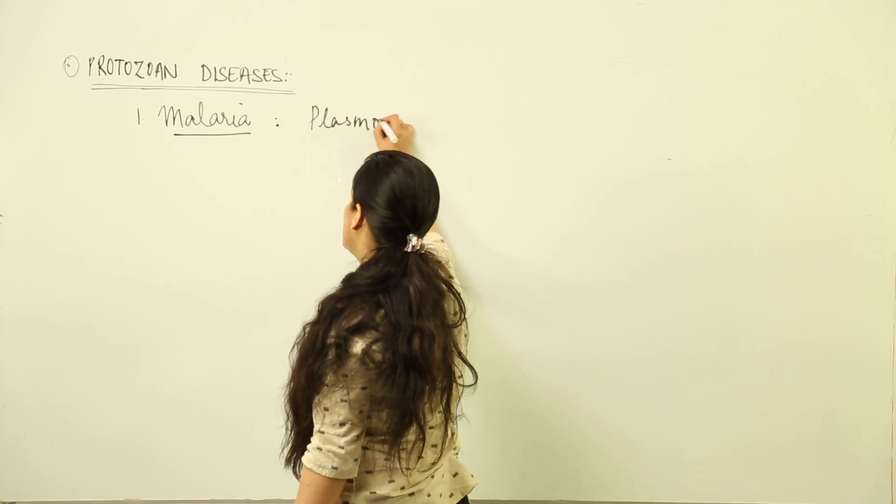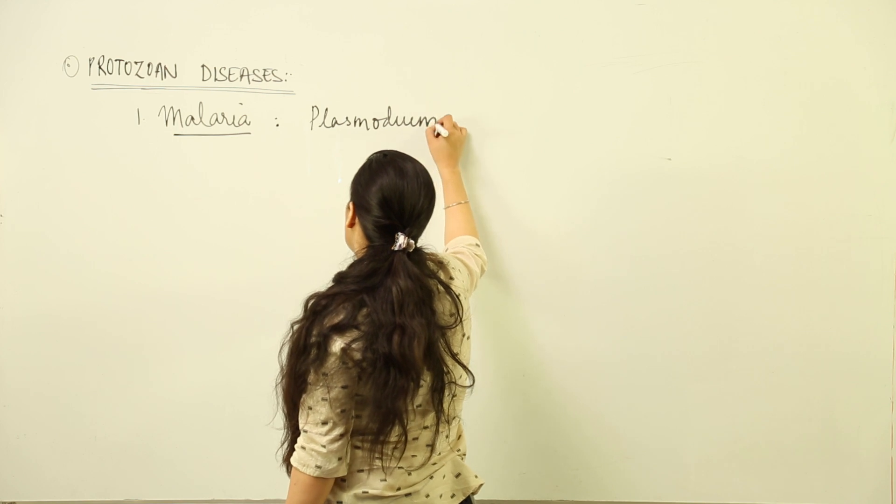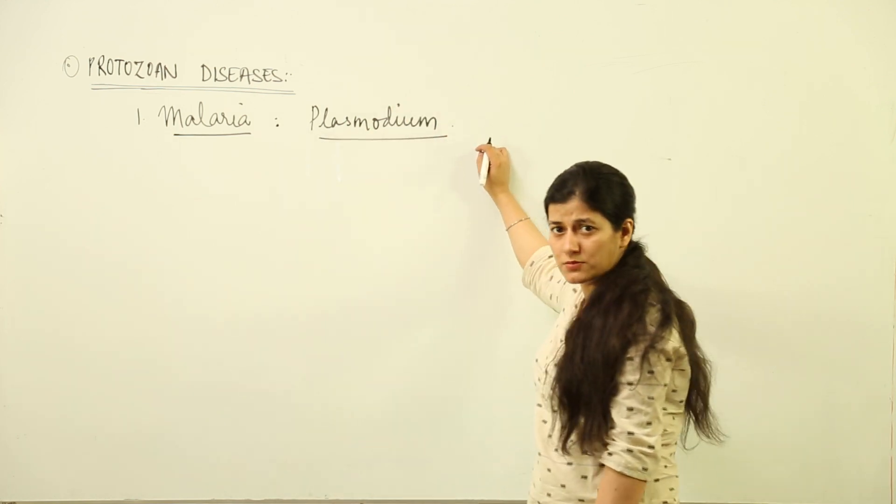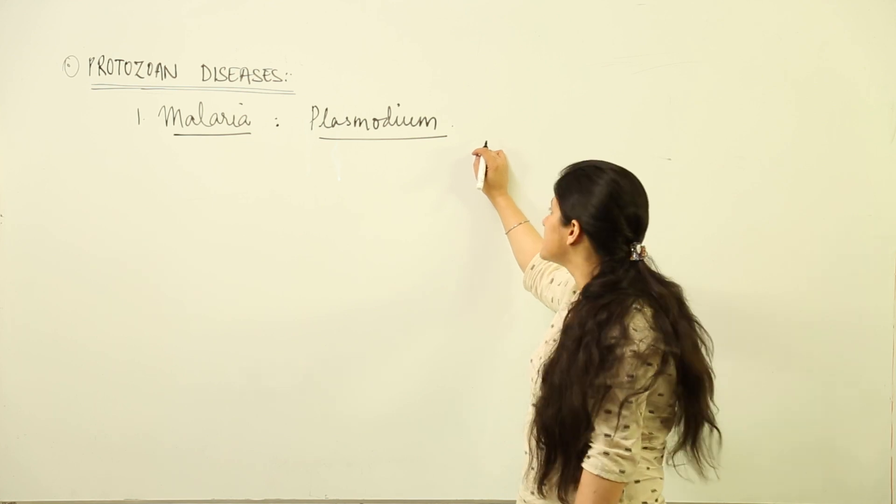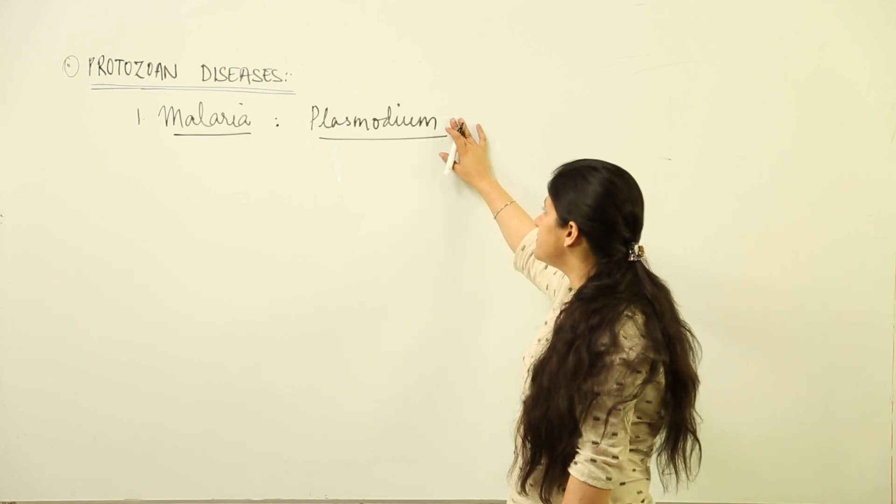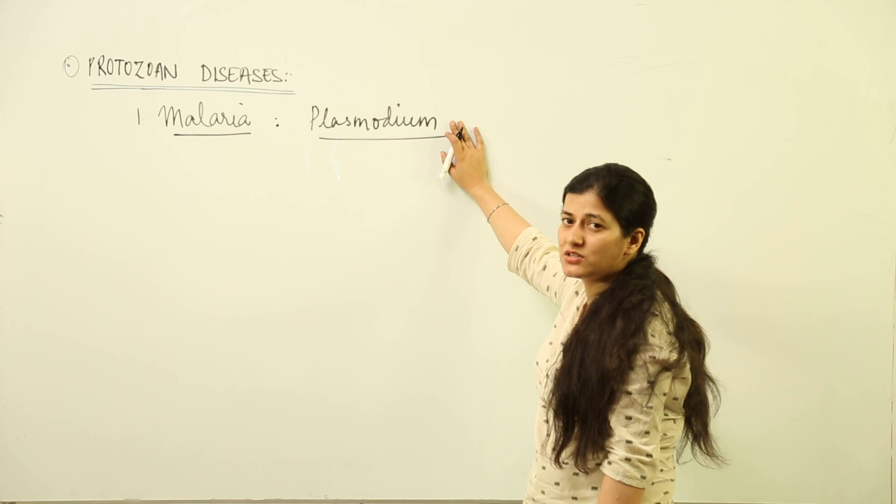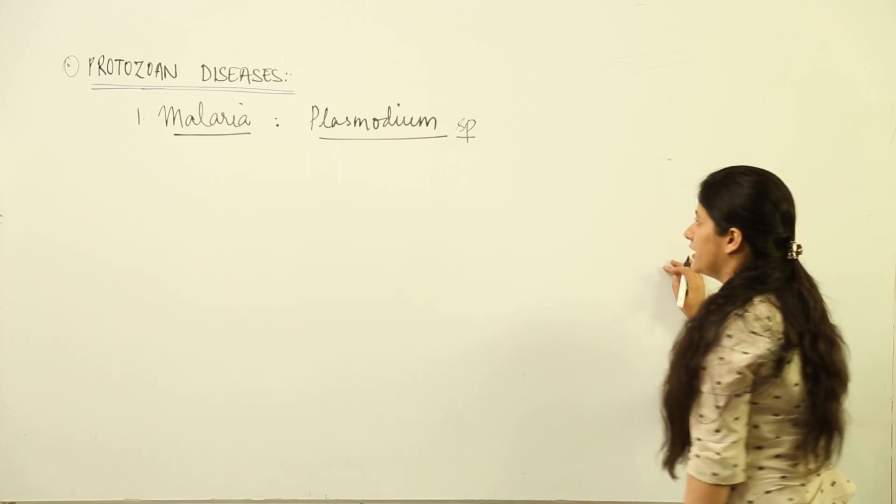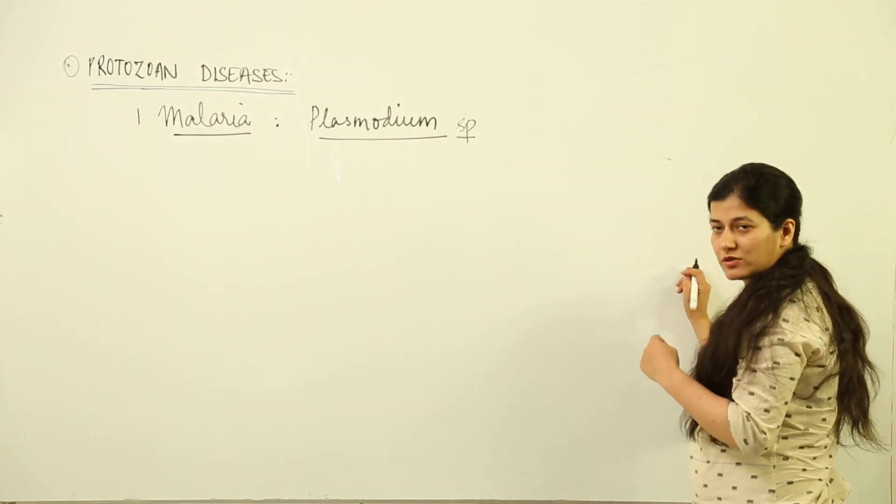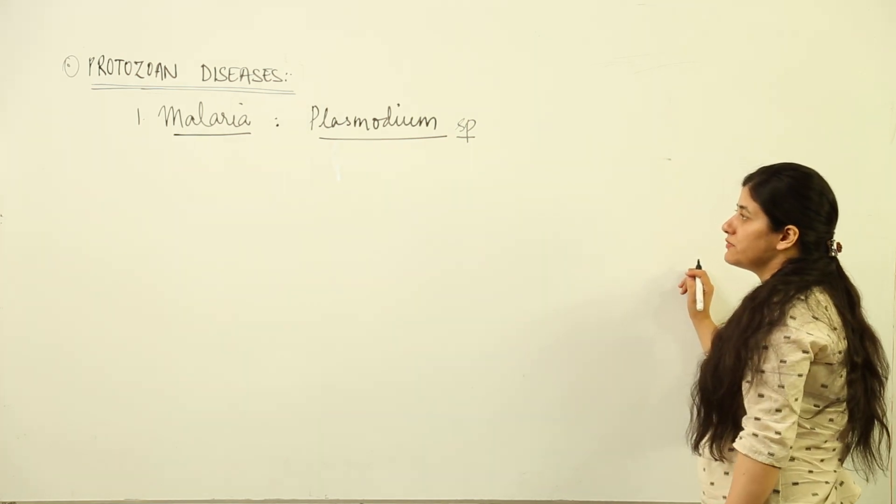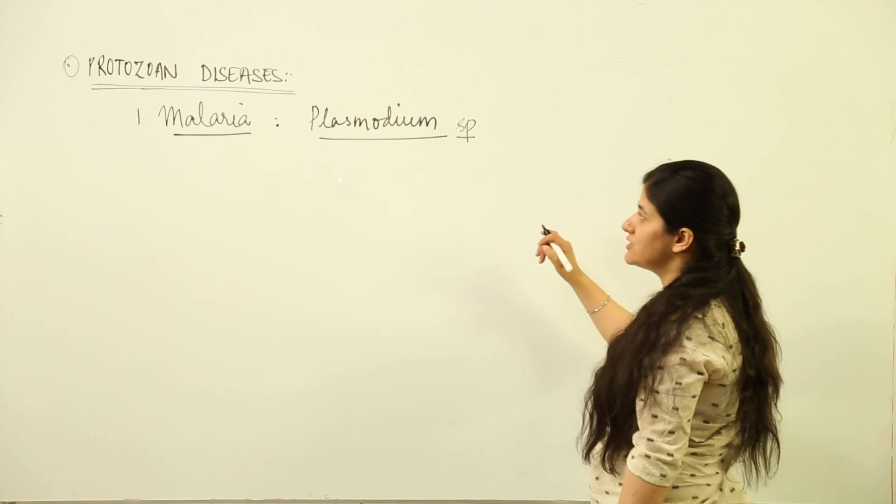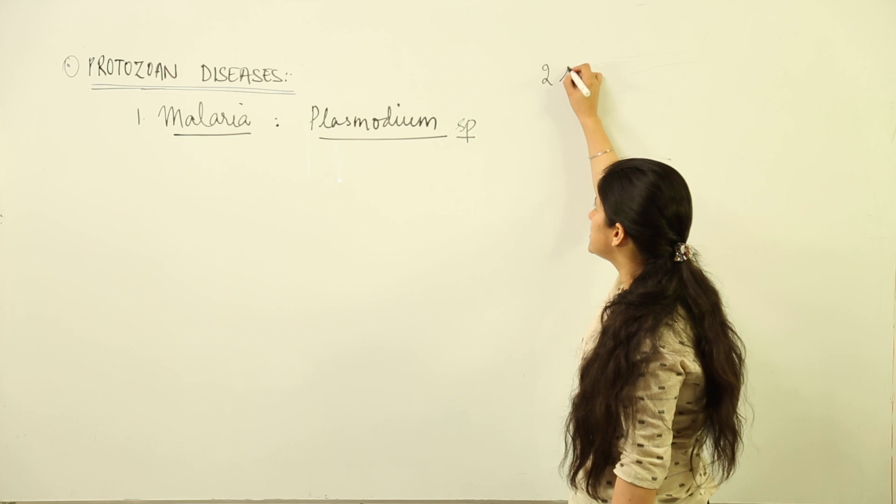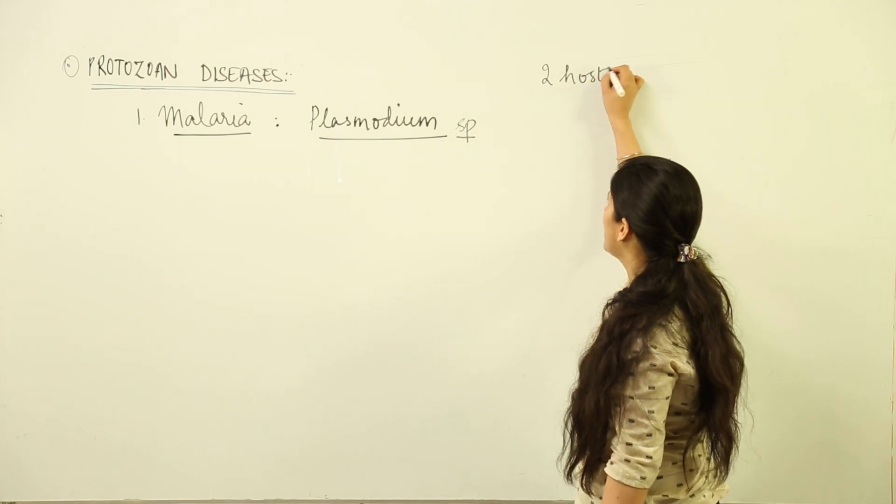There are three types of Plasmodium known for their notoriety: Plasmodium falciparum, Plasmodium vivax, and one more species. This Plasmodium is a protozoan parasite and has two hosts: one being man and the other being Anopheles mosquito.